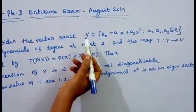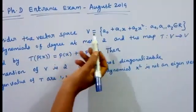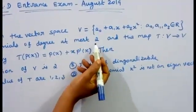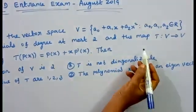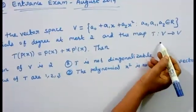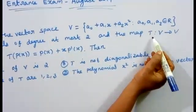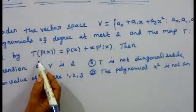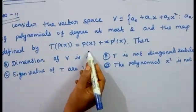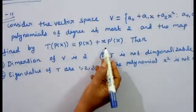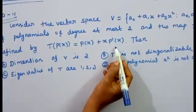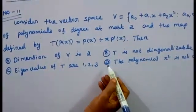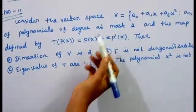V is a vector space of polynomials of degree at most 2. We have a linear operator T from V to V defined by T(p(x)) = p(x) + x·p'(x). We have 4 options to check for this mapping and vector space.